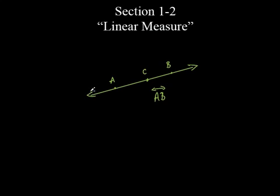The key to this was understanding that it kept on going in both directions. It didn't start at A and end at B. It meant that this line had two points on it, and all we have to do is label just two points that were actually on the line. I could have picked any. If I had 20 points all labeled on this line, I would just pick two of them and name it line whatever — as long as they pick two points.